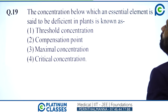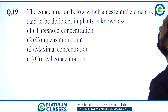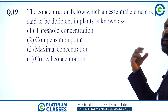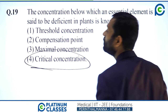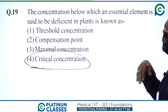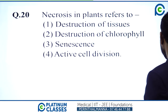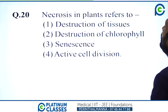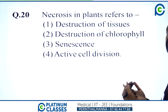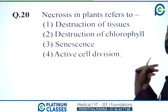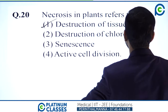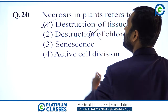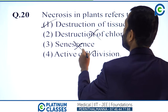The concentration below which an essential element is said to be deficient in a plant is known as the critical concentration — option 2. Necrosis in plants refers to death of tissue — option 1. Chlorosis is yellowing, necrosis is death of tissue, distinct from destruction of chlorophyll or senescence.